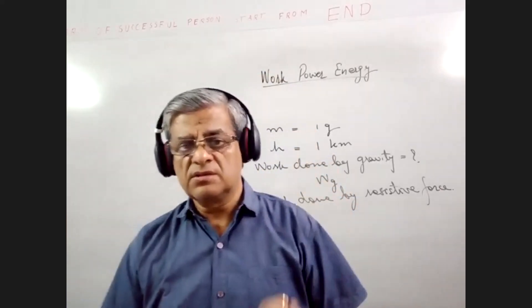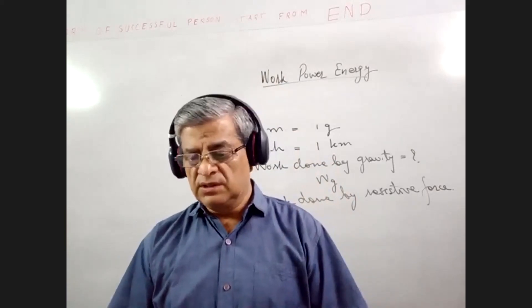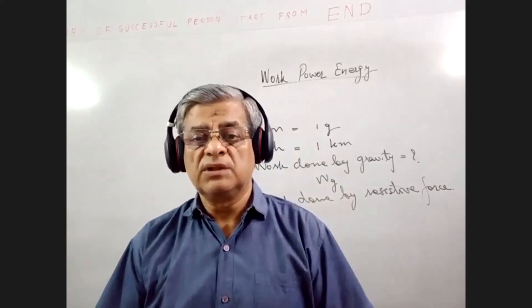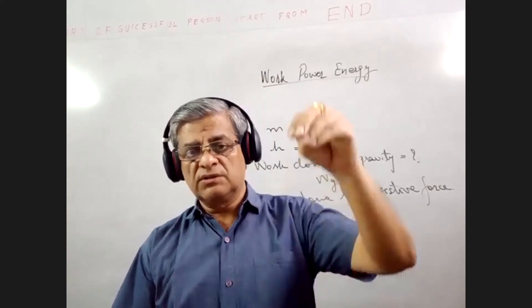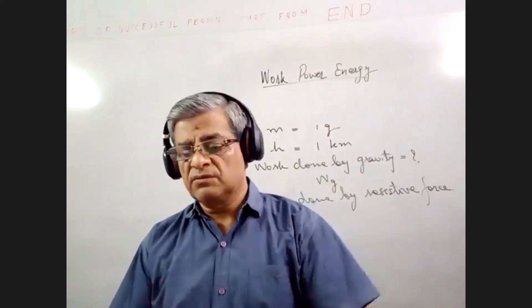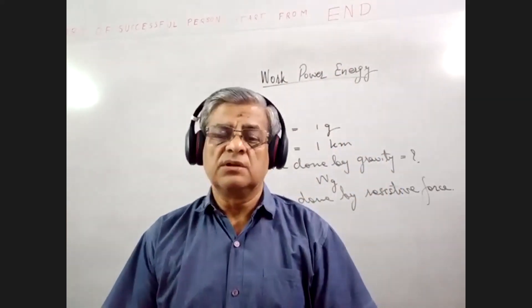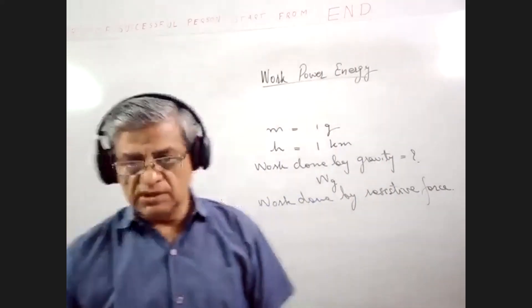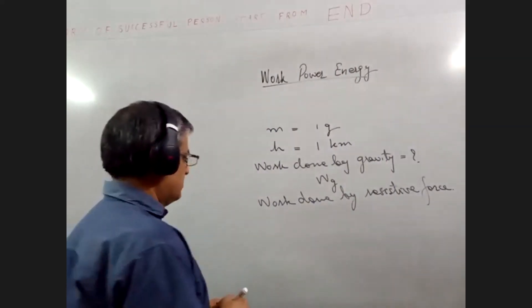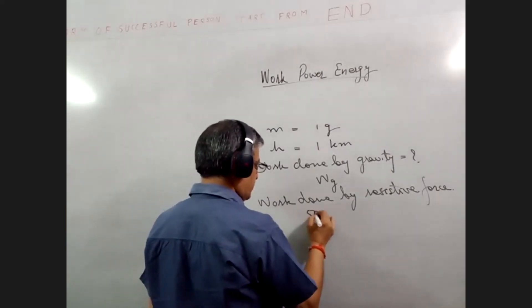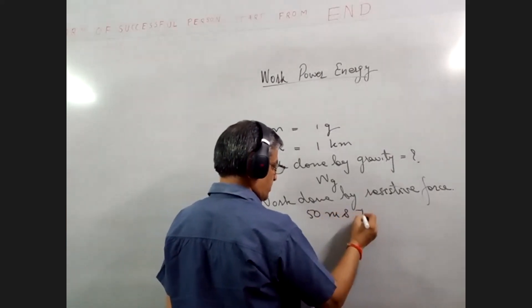This uniform velocity is called terminal velocity. The velocity with which the drop moves with constant velocity in the air is called its terminal velocity. That velocity is given to be 50 meters per second.